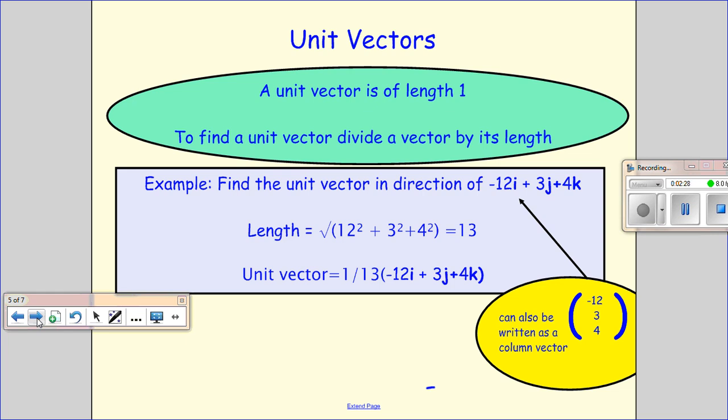Now, if you want to find a unit vector in a given direction, what you do is take the vector, take another vector in that direction. You find its length and you divide it by its length because you only want to go one unit in that direction.